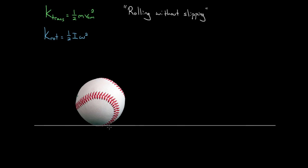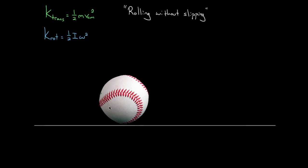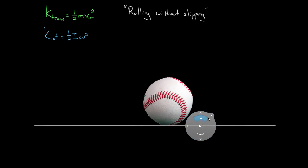There's going to be no sliding motion at this bottom surface here. This is a little weird to think about, but at any given moment, this baseball rolling across the ground has zero velocity at the very bottom. This bottom surface isn't actually moving with respect to the ground — otherwise it would be slipping or sliding — and so this point on the baseball in contact with the ground has zero velocity.